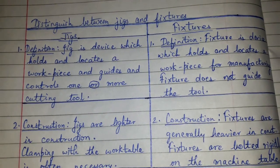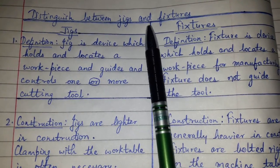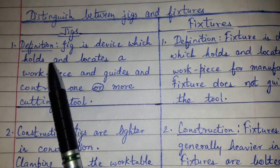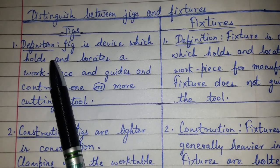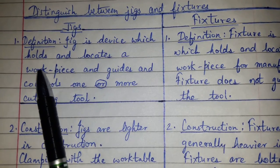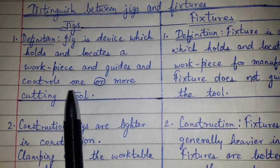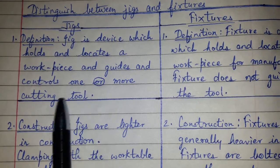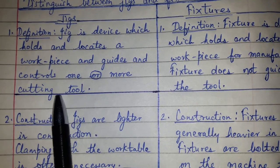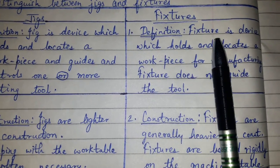Today's topic of discussion is to distinguish between jigs and fixtures. By definition, a jig is a device which holds and locates a workpiece and guides and controls one or more cutting tools. Here, the cutting tool is controlled and guided by the jig.